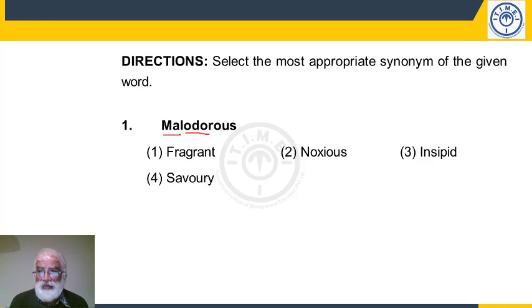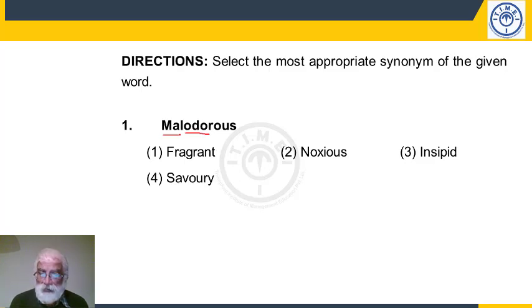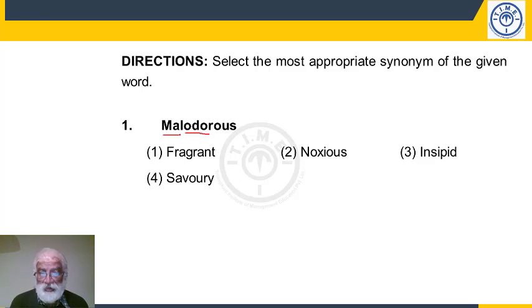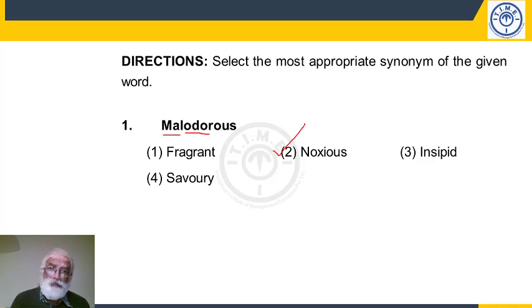Savory is a pleasant, spicy kind of smell that we enjoy. Fragrant and savory are both positive words, whereas what we want is a negative word. Insipid is not negative — it means no smell at all. The word we're looking for is noxious, which normally means harmful but can also mean very unpleasant. Noxious is the synonym of malodorous. Fragrant means sweet smelling, savory means interesting smelling, insipid means having no smell, and noxious means having an unpleasant or bad smell.